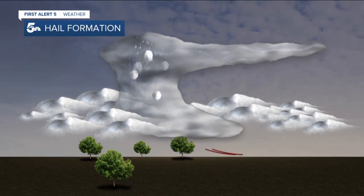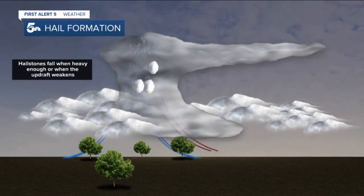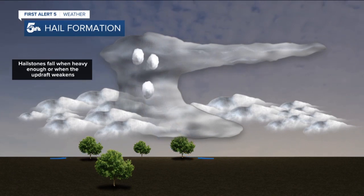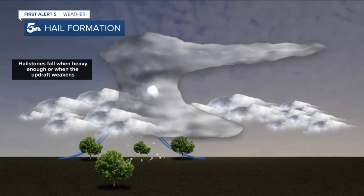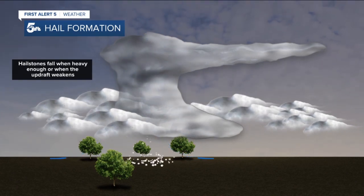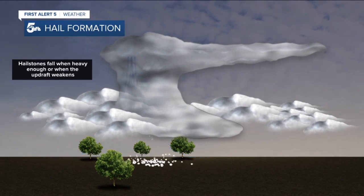Sometimes hailstones collide and freeze together. Hail falls when the updraft weakens or when the hail becomes too heavy for the strength of the updraft.